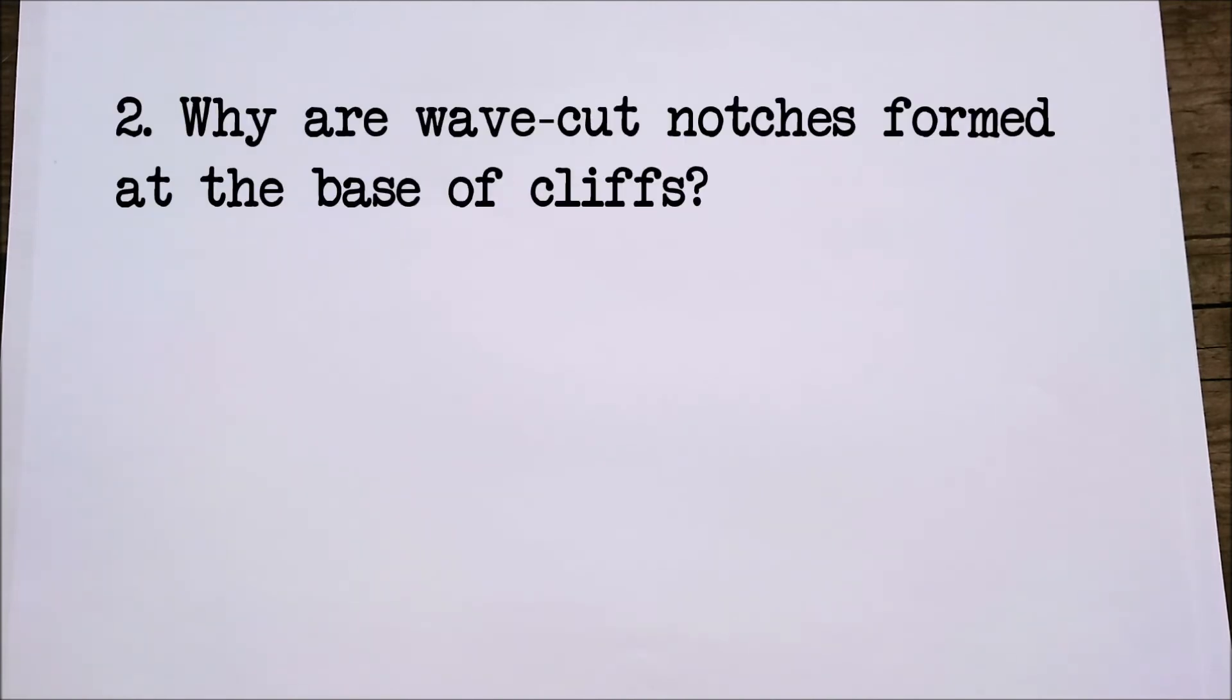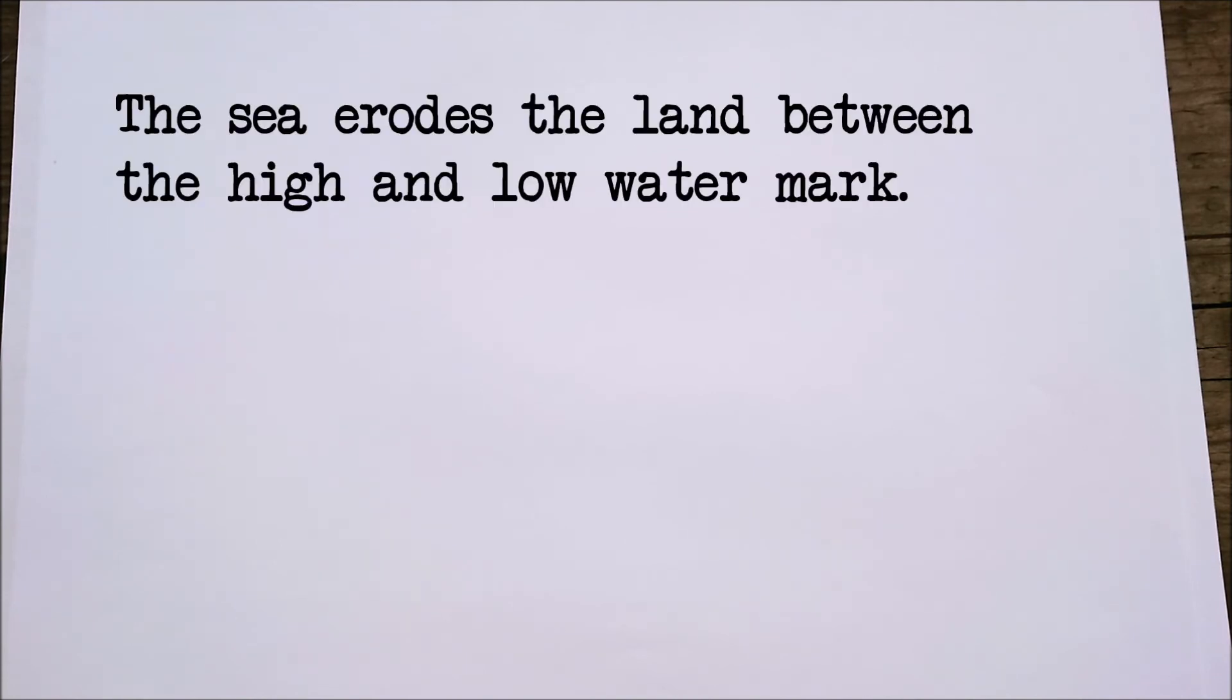Question two: why are wave cut notches formed at the base of cliffs? Well, the sea can only really erode the part where it's moving and where it touches, and that's the base of the cliff in between the high watermark and the low watermark. So a wave cut notch is an indent in the cliff formed between high and low watermarks.